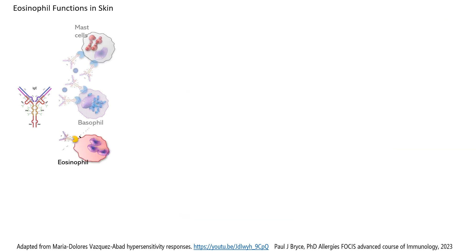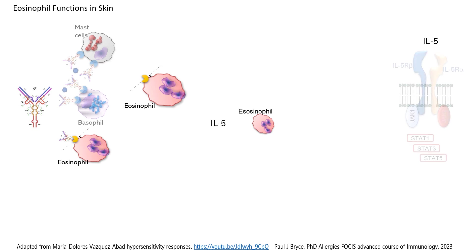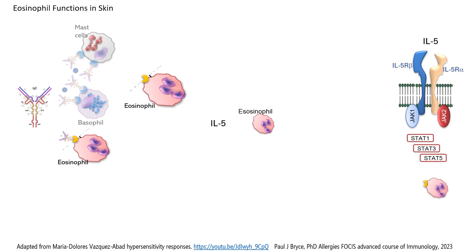The other cell that is critical in the allergic response is the eosinophil. The interleukin-5 receptor is present in eosinophils, and it signals through the JAK-STAT system to produce maturation, survival, and activation of the eosinophils. It signals through JAK-1 and JAK-2.